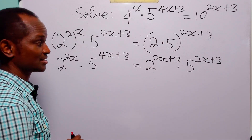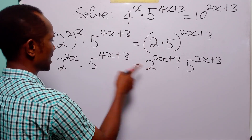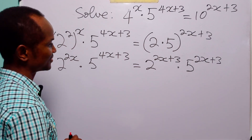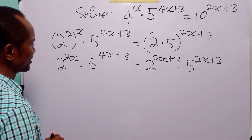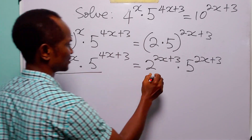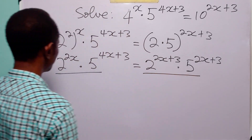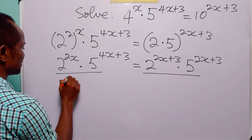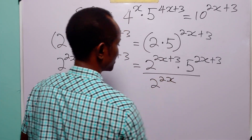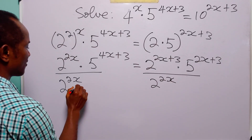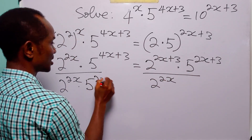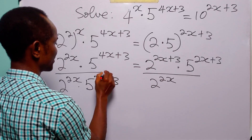You can see that we have two bases: base 2 and base 5. So let us collect the bases together. What we are going to do is divide both sides of this equation by 2 to the power 2x and 5 to the power 2x plus 3.